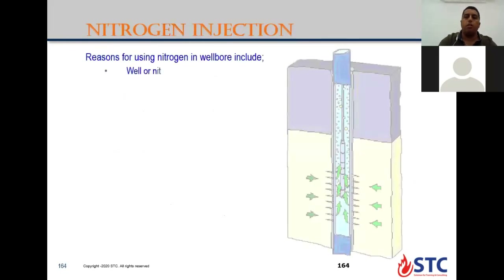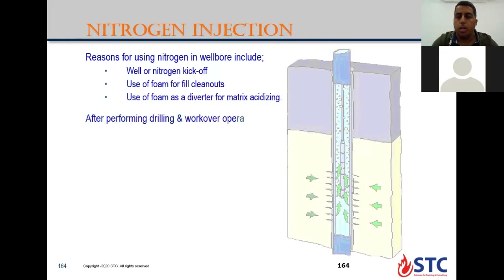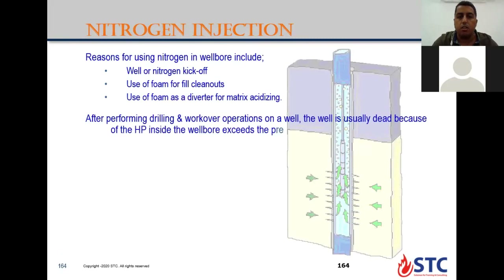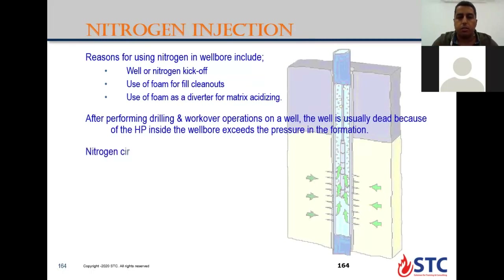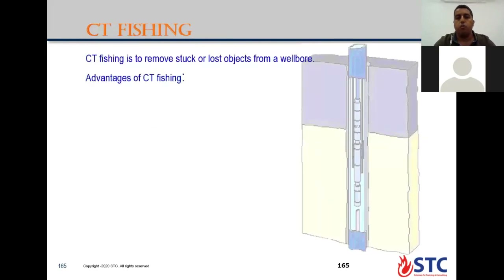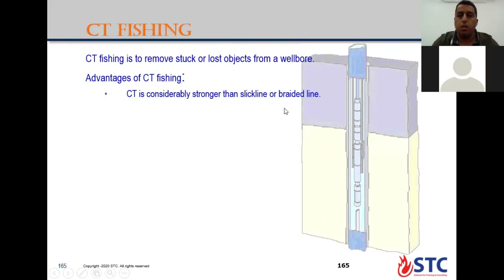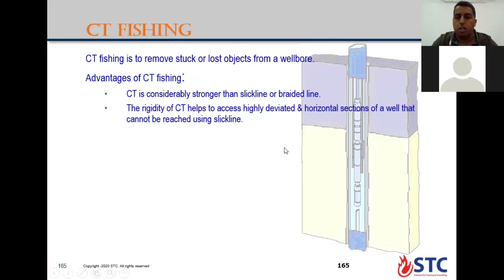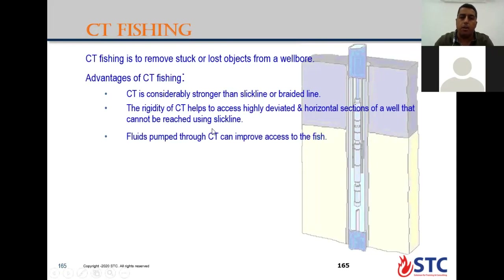Nitrogen injection or lifting the well with nitrogen for kickoff, or to clean the well from spent acid after acidizing, or use foam sometimes for cleaning or lifting the well. CT fishing tools give you advantage as they are stronger than slick line or braided line in the pulling capacity with CT — especially in highly deviated or horizontal sections, because slick line or wire line has limitation up to around 60 degrees inclination. You can also pump fluid through coil tubing which helps improve access to the top of the fish.